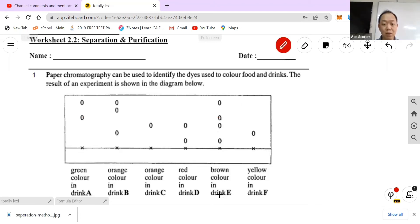For example, this brown color in drink E is actually made up of four different colors: one, two, three, four as shown over here.